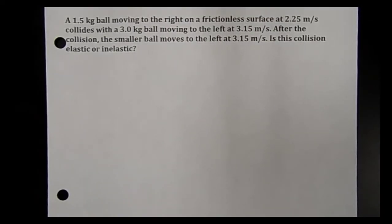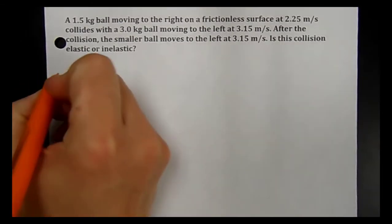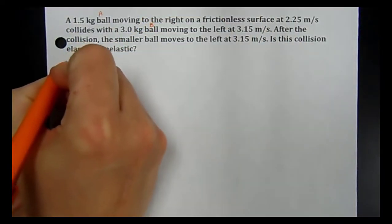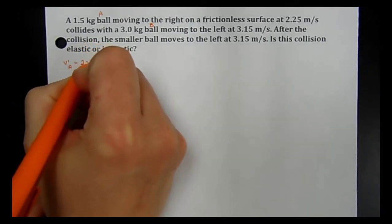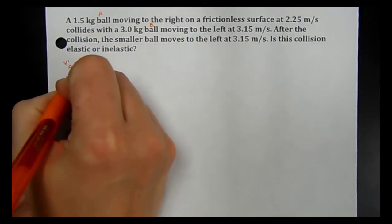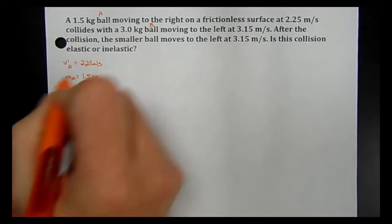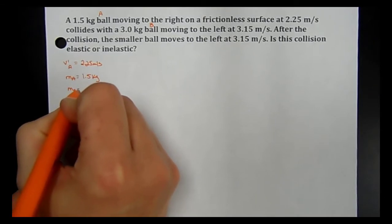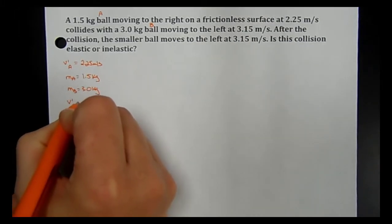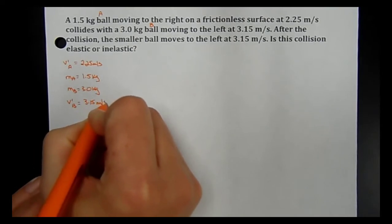Let's look at an example and see if it's elastic or inelastic. We have a 1.5 kg ball — call it ball A — moving to the right on a frictionless surface at 2.25 m/s. It collides with a 3 kg ball — ball B — moving to the left at 3.15 m/s.